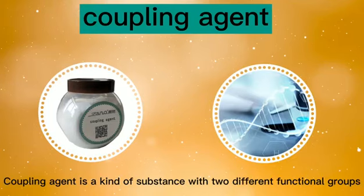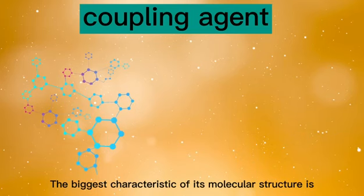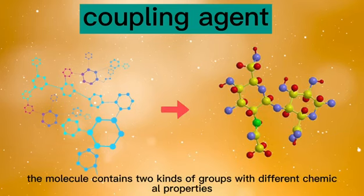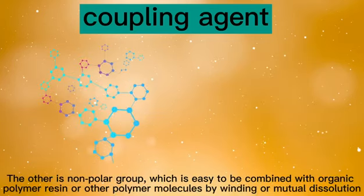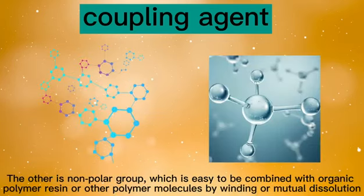Coupling agent is a kind of substance with two different functional groups. The biggest characteristic of its molecular structure is that the molecule contains two kinds of groups with different chemical properties. One is a polar group which is easy to react, combine or adsorb with hydrogen bonds and other groups on the surface of inorganic substances. The other is a non-polar group which is easy to be combined with organic polymer resin or other polymer molecules by winding or mutual dissolution.